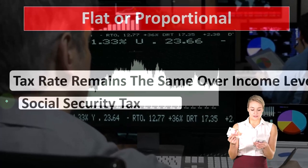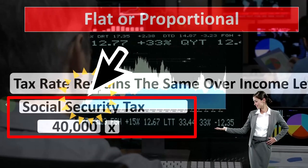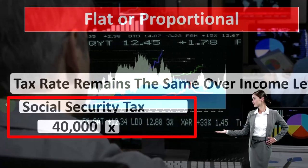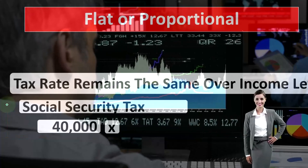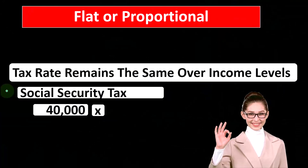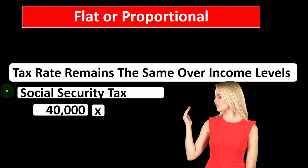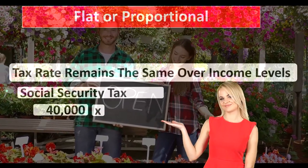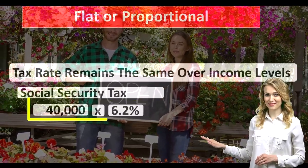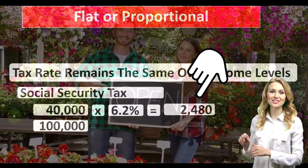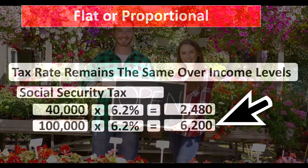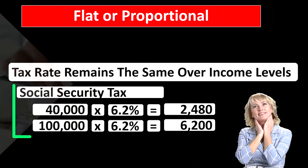In the United States, social security uses a kind of flat tax system — specifically the payroll tax, where you pay into social security and potentially receive benefits at retirement age. It's reported on W-2s for employees, but self-employed individuals handle it separately. For example, at a 6.2% rate: $40,000 × 6.2% = $2,480, and $100,000 × 6.2% = $6,200 — that's essentially a flat tax, easy to project and budget.